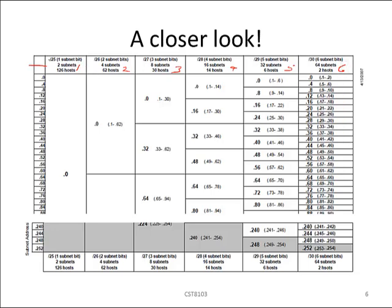Our first recipe is for two subnets, and each subnet supports 126 usable hosts. Our second recipe is for four subnets, each supporting 62 usable hosts. Our third is eight subnets and 30 hosts. Fast-forwarding to the last recipe, it supports 64 subnets where each subnet can carry two usable IPs.